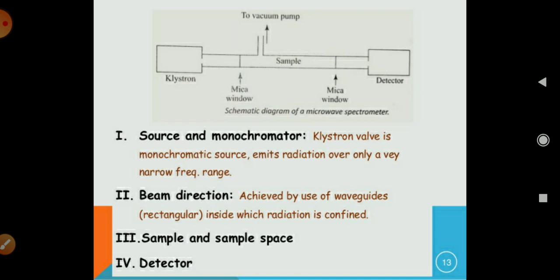This is also a diagram of a microwave spectrophotometer. Here you can see the klystron valve is a monochromatic source and it emits radiation over only a very narrow frequency range. Here you put the sample here and there is a mica window, and then after you can see here the vacuum pump over the source and sample, and it is a detector.